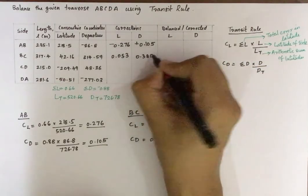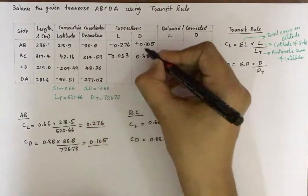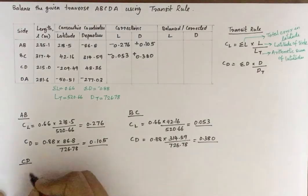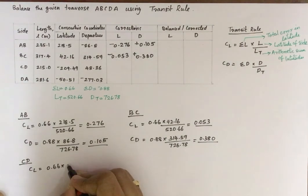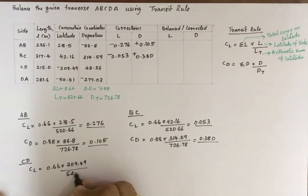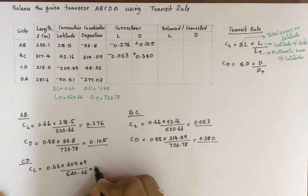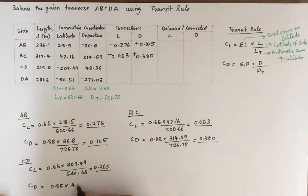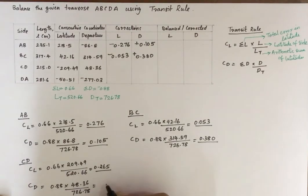Error positive means correction negative; error negative means correction positive. For side CD, the correction to latitude is 0.66 multiplied by the latitude of CD (209.49), divided by 520.66, giving 0.265. The correction to departure is 0.88 multiplied by the departure of CD (48.36), divided by 726.78, giving 0.058.